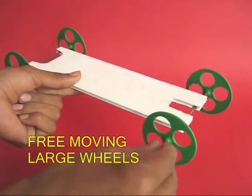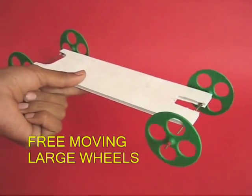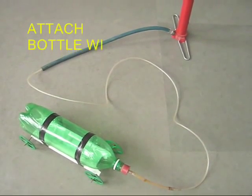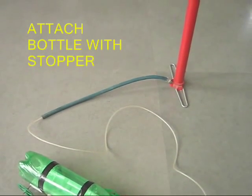The wheels can rotate freely, and then a plastic bottle is taped to this car. The bottle is connected to an air pump with the help of a cork and some tube.